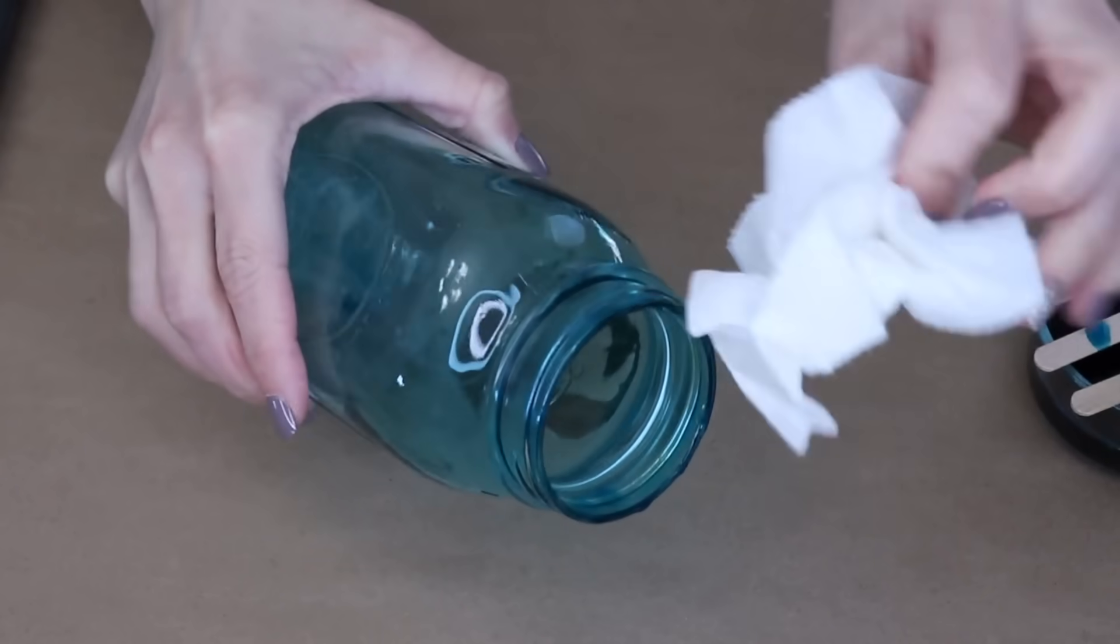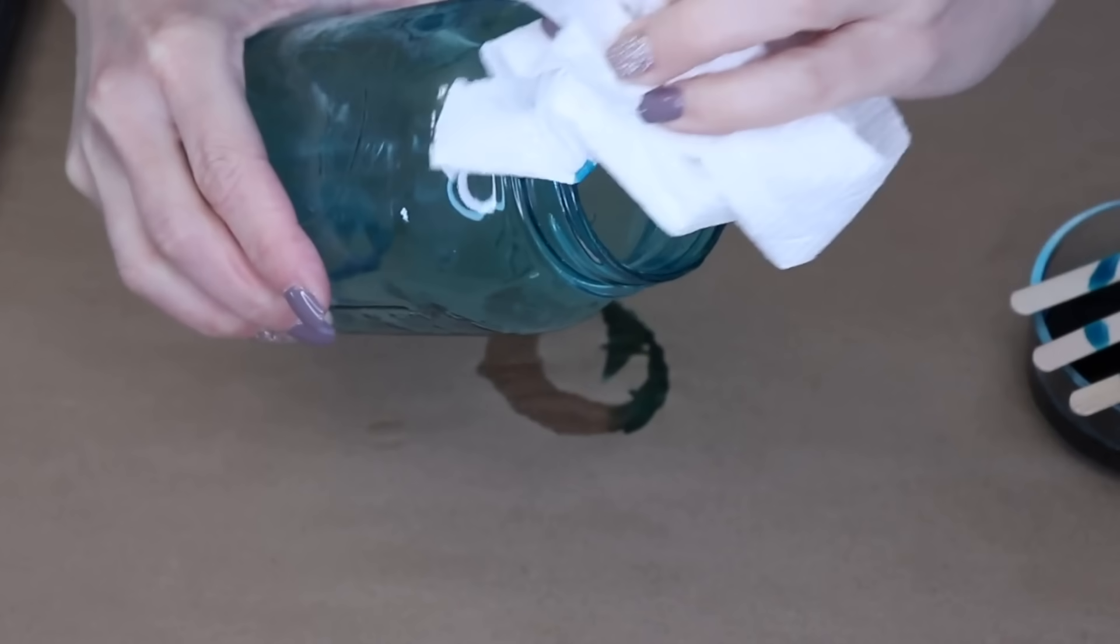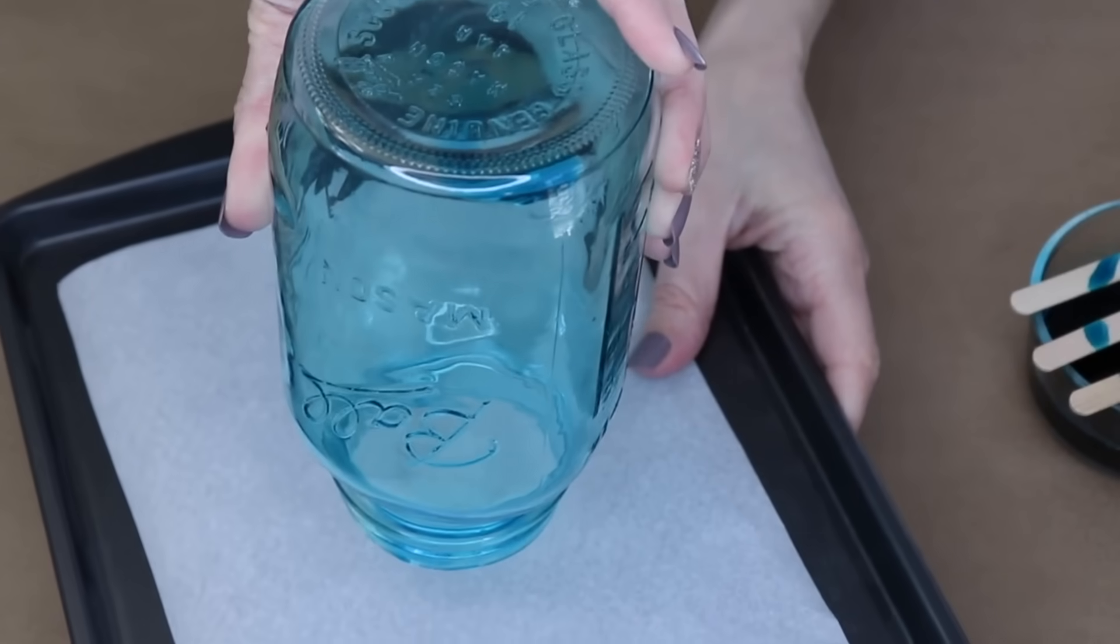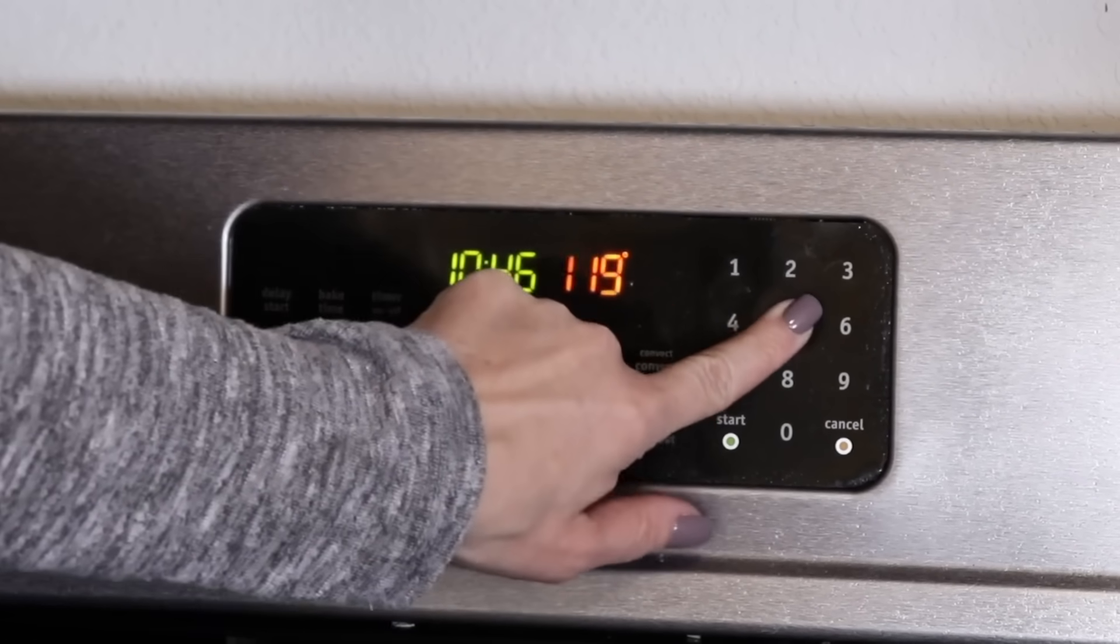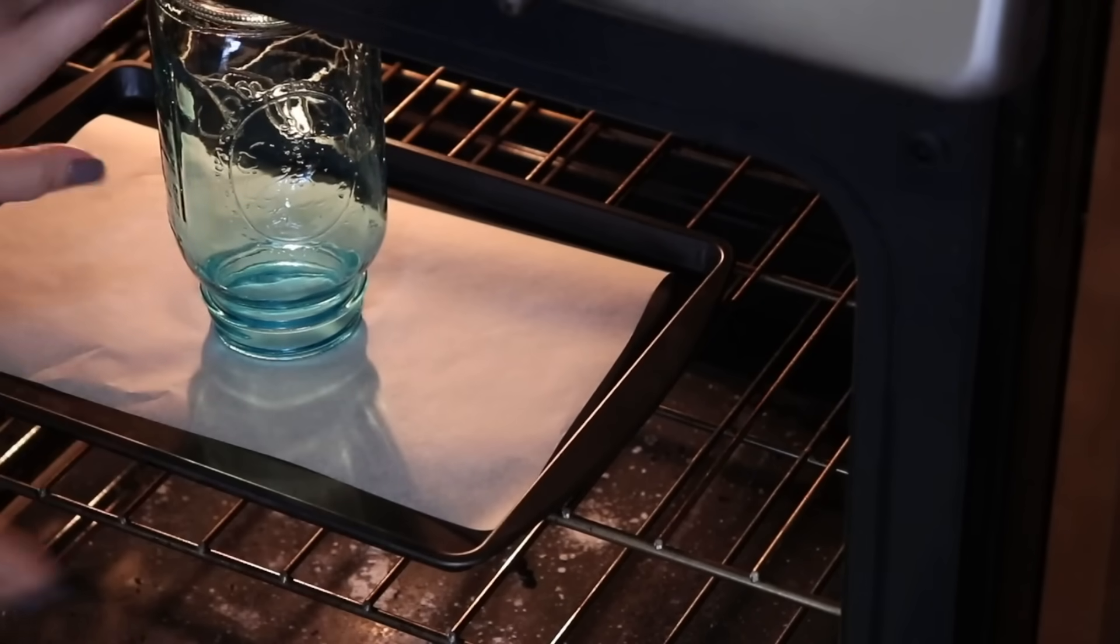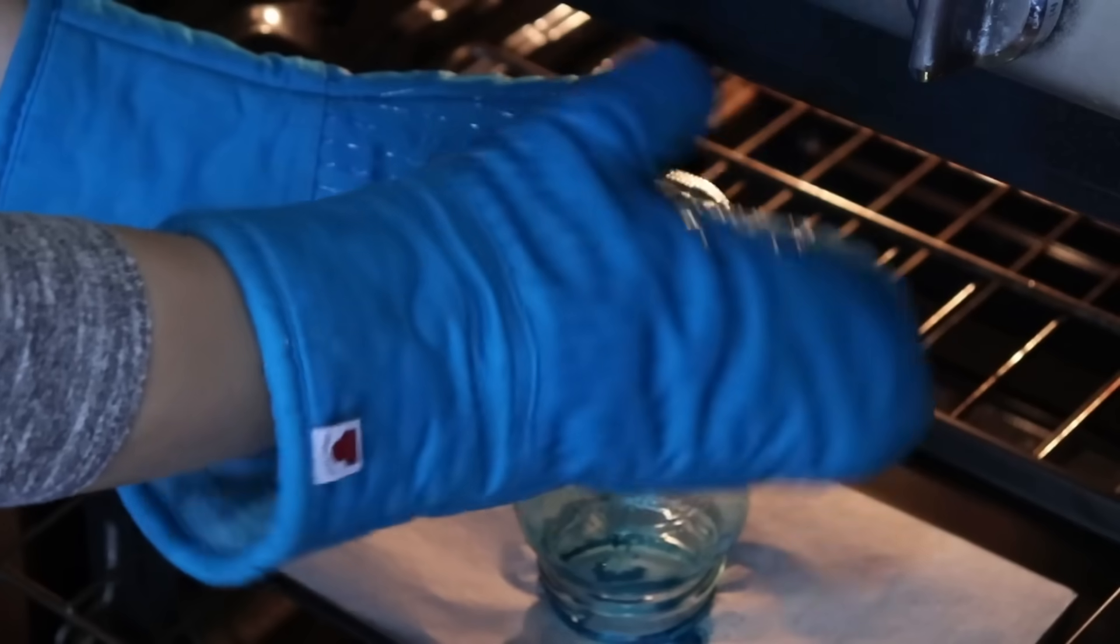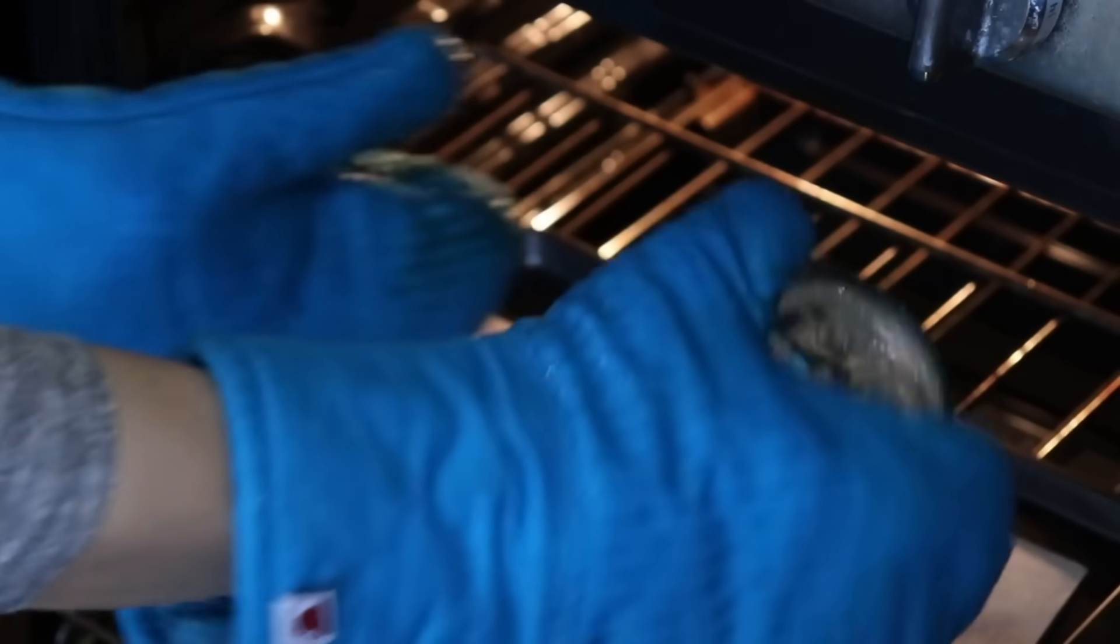Take a paper towel, wipe off any excess drips that are around the rim of the jar. Then place this upside down on a piece of parchment paper. Pop it in your oven at 175 for about 20 minutes. After 20 minutes, take it out, turn it right side up, and let it cool completely.